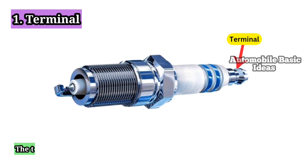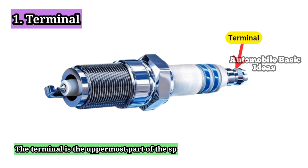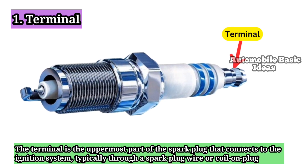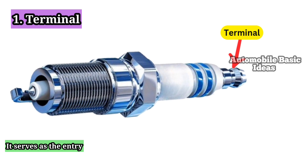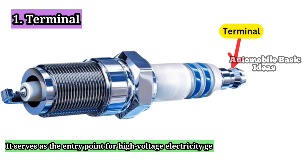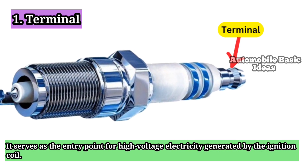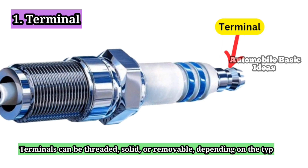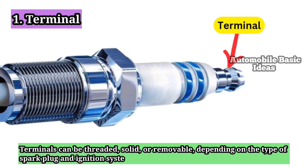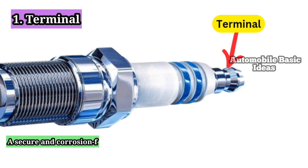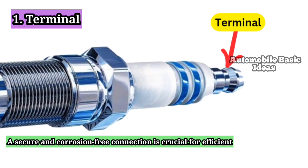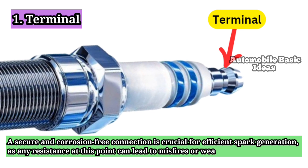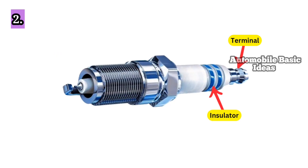1. Terminal. The terminal is the uppermost part of the spark plug that connects to the ignition system, typically through a spark plug wire or coil-on plug system. It serves as the entry point for high-voltage electricity generated by the ignition coil. Terminals can be threaded, solid, or removable, depending on the type of spark plug and ignition system. A secure and corrosion-free connection is crucial for efficient spark generation, as any resistance at this point can lead to misfires or weak sparks, affecting engine performance.